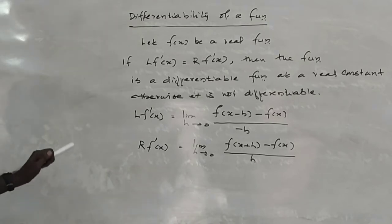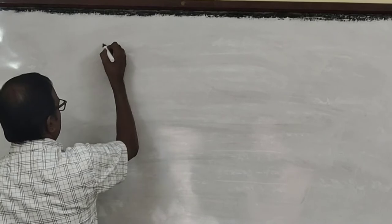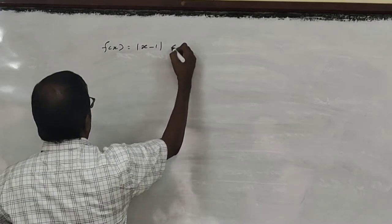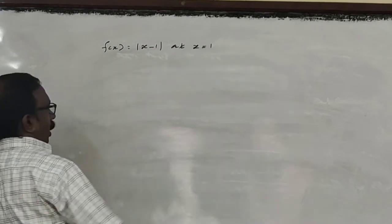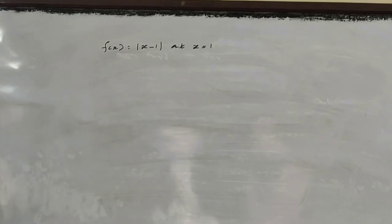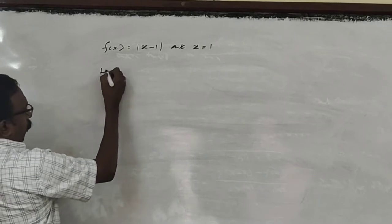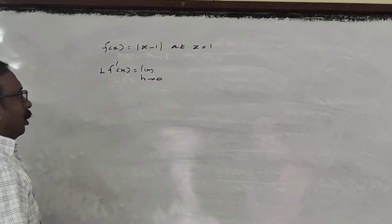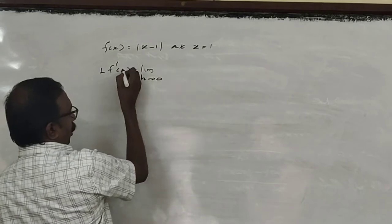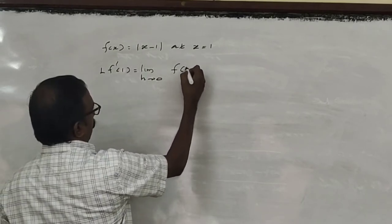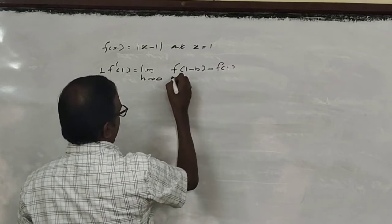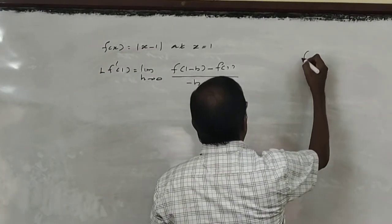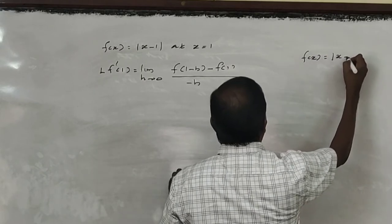Let us discuss with an example. Consider the function f(x) = |x - 1|. Let us check whether this function is differentiable.